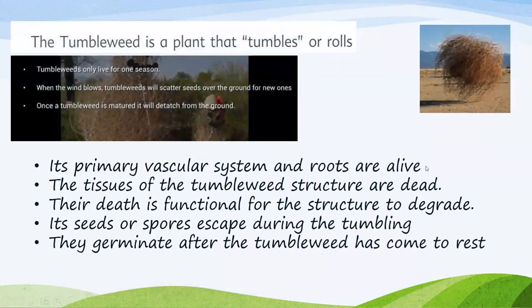Here are some fun facts about adaptation. The tumbleweed is a plant that tumbles or rolls. It only lives for one season. Why does it tumble? Because the leaves are no longer of use to the original plant, so it detaches. Only its primary vascular system and roots remain alive — the rest is dead. It travels far, and its seeds or spores escape during the journey. When they find water and an appropriate environment, they germinate. That is another type of adaptation, and it is very interesting.